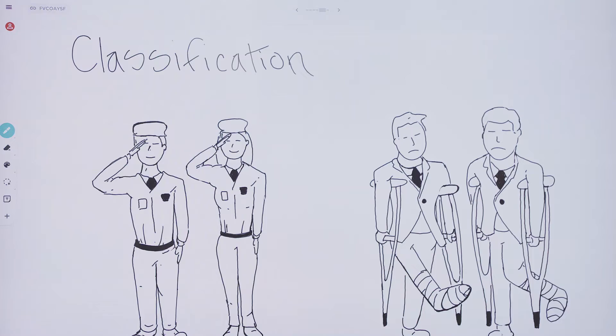We can also turn this into a multi-class classification problem by trying to predict where on the body a soldier will be injured. Maybe that's a leg, left arm, right arm, or torso. That would be a multi-class classification problem.